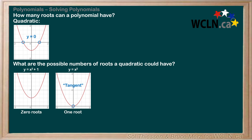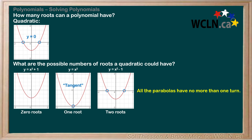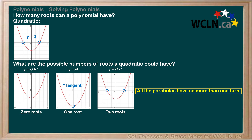Finally, if the low point of the parabola sits below the x-axis, like in this graph of y equals x squared minus 1, then the parabola will cross the x-axis at two points, meaning that the quadratic has two roots. Notice that in these examples all the parabolas have no more than one turn, where the direction of the plot changes. The point of this analysis was to show that a quadratic function, which is of degree two, can have at most two roots and at minimum zero roots, with no more than one turn.